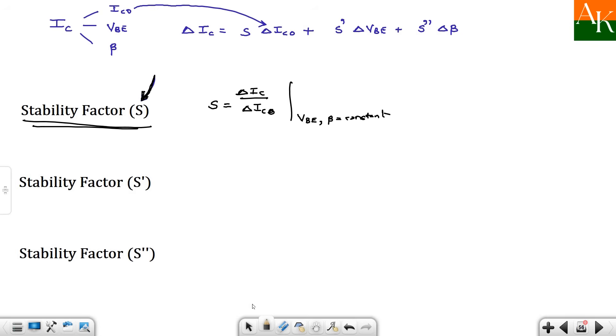And for this problem, you have to consider this term. This is nothing but delta IC divided by delta VBE. And for this purpose you have to keep ICO and beta constant.